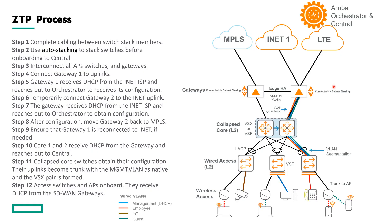Next, let's take a look at the ZTP process. Zero-touch provisioning is critical because many customers doing branch refreshes are doing tens or even hundreds of branches every few days. They may not have network engineers on-site at every branch — it may be contractors or even a store manager on the phone with remote support. The first step is to get your switches stacked. We recommend using the auto-stack feature introduced in AOS CX 10.7 and beyond, which allows switches to be cabled and then simply pressing a button on the conductor to automatically complete stacking.